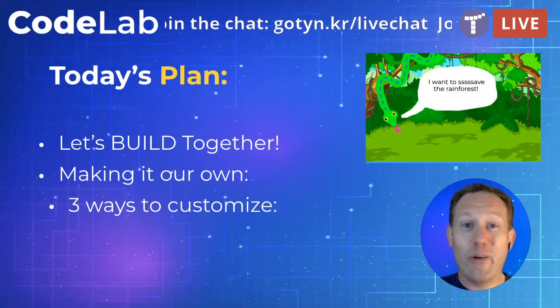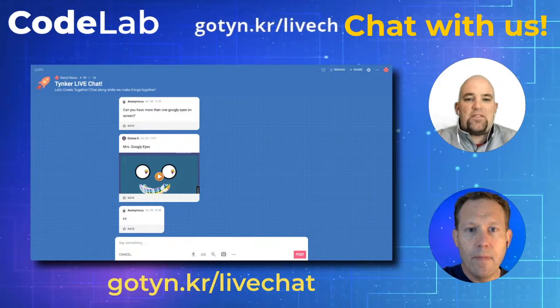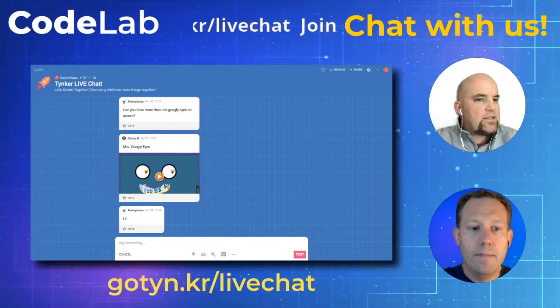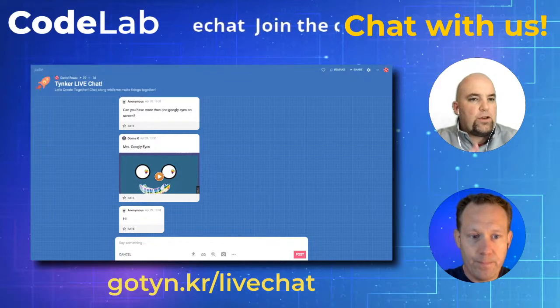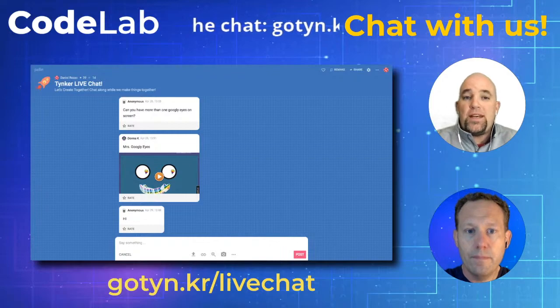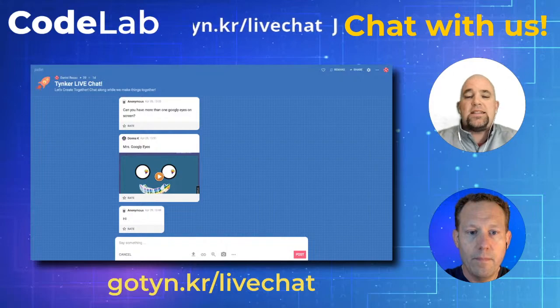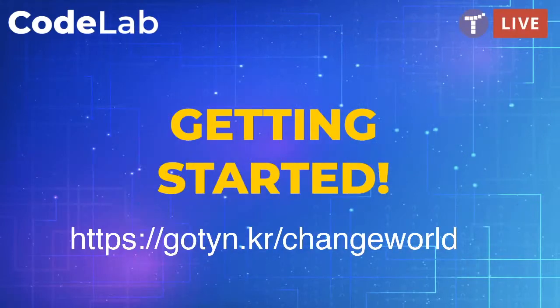As always, we have a chat — go to gotinker slash live chat. Remember, don't use your real names there for student privacy reasons. We especially want to see your projects as we go through the week, so post those at any time. Getting started on this project is super easy: just go to gotinker slash change_world and that will get you right into this project.